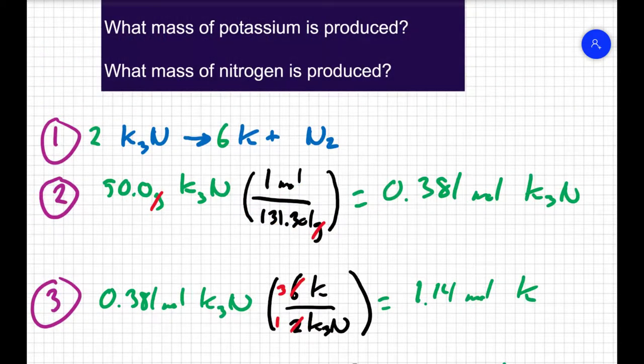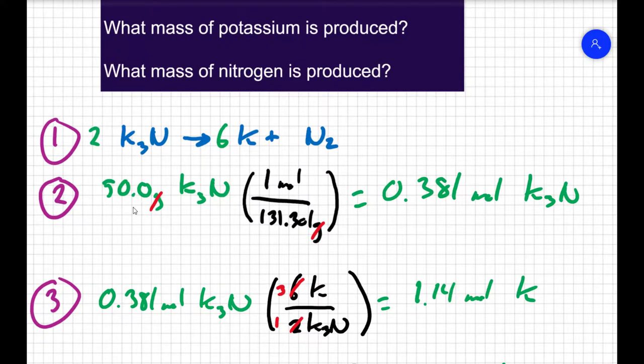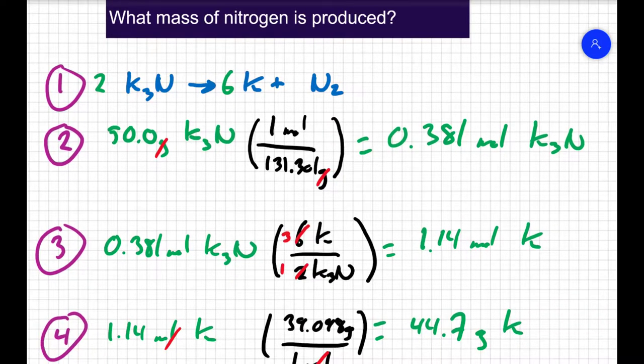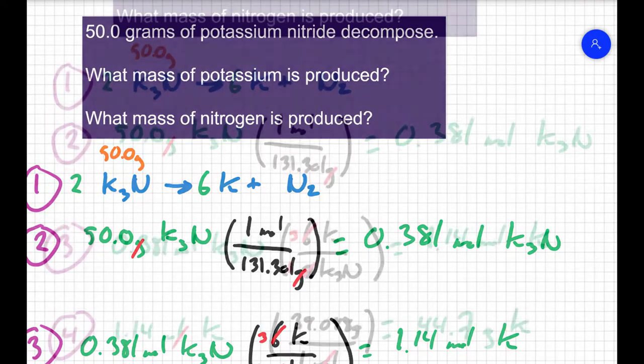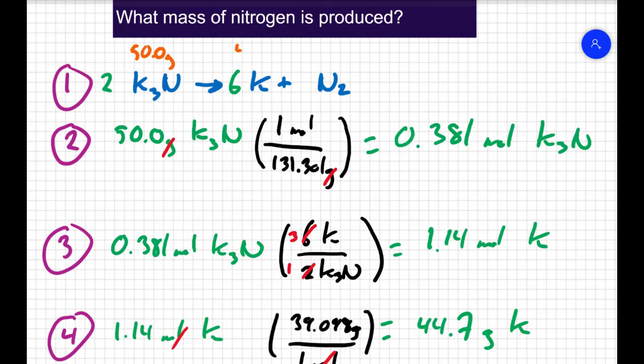The second part of the question is asking for the mass of nitrogen produced. We could run through the same process, or we could use the concept of conservation of mass. I'm starting with 50 grams of potassium nitride, and we just found that we make 44.7 grams of potassium. So the rest of the mass must go to the nitrogen. 50 minus 44.7 gives me 5.3 grams of nitrogen.